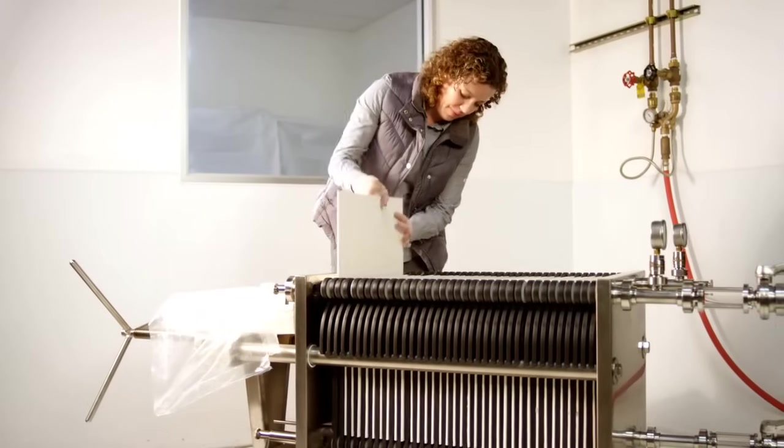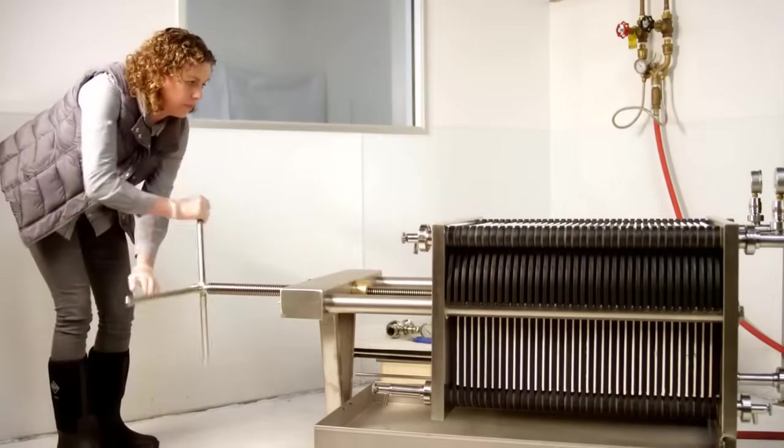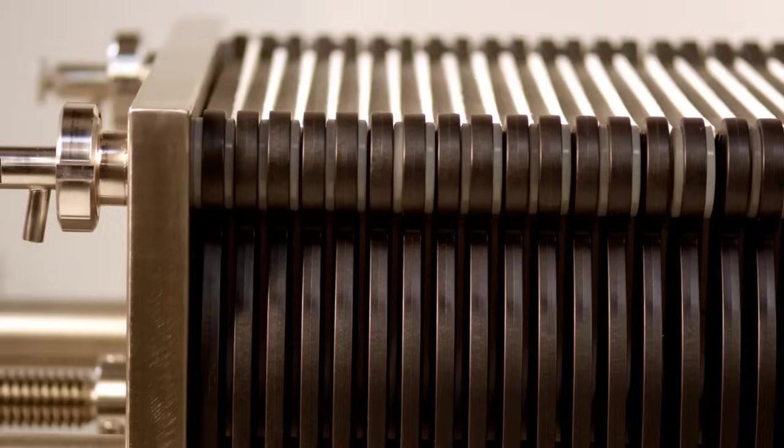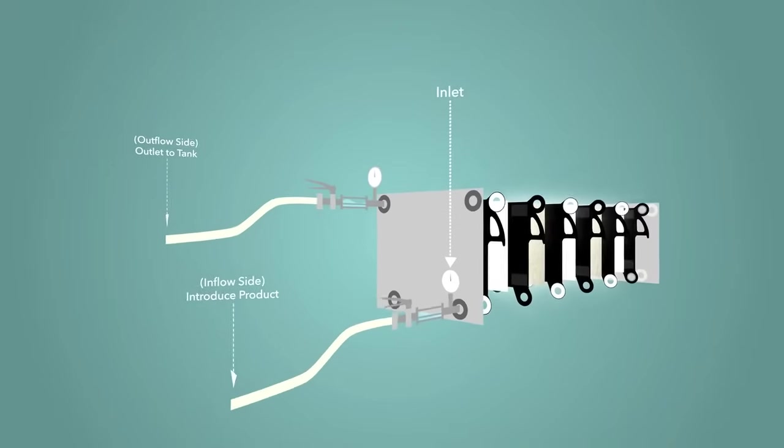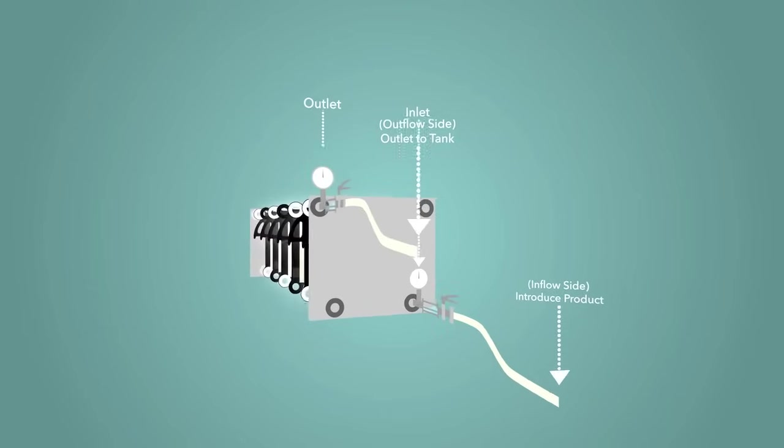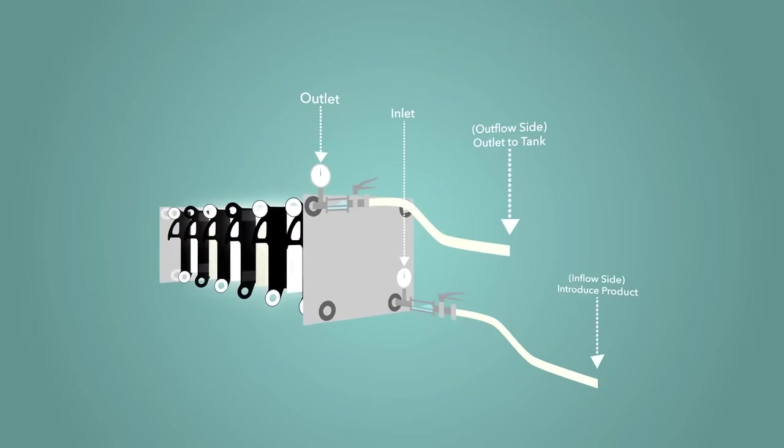After inserting one sheet between each plate, lightly tighten the filter using the spindle or other tightening device. In a standard filtration, the product inlet is commonly situated at the bottom right port. The product outlet is located at the top port.